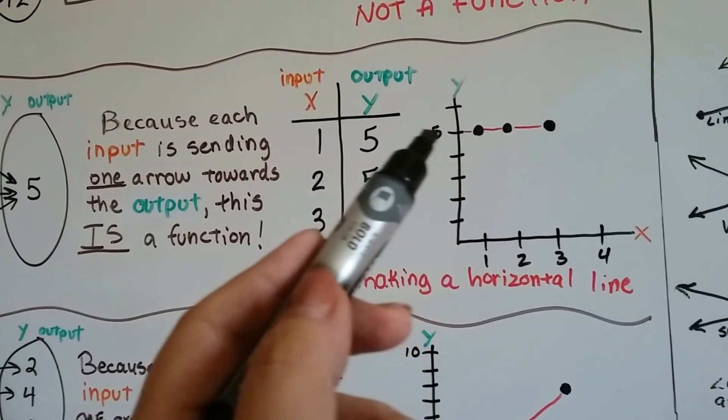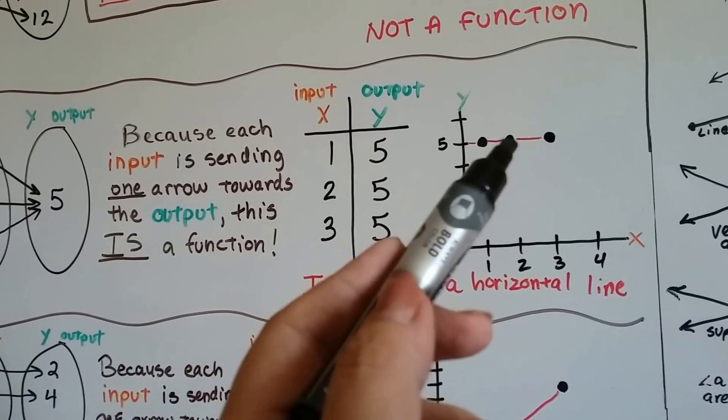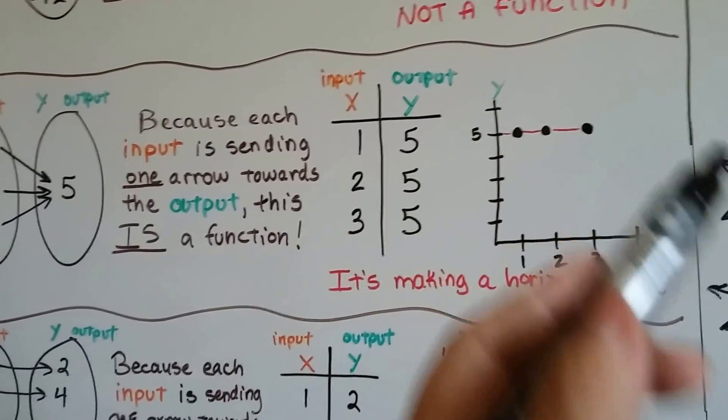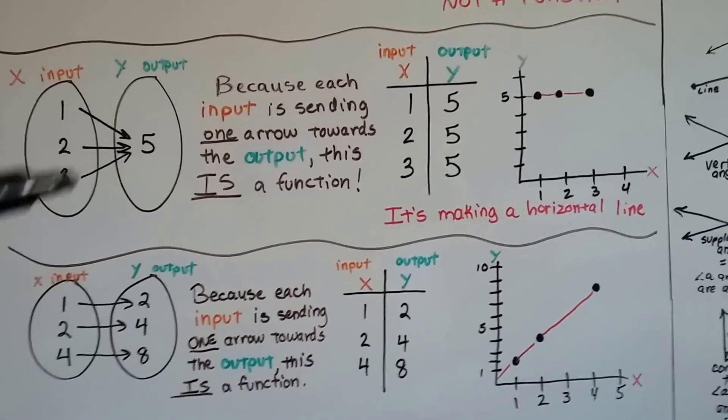1 with a 5 on the y is right here. 2, x with a 5 on the y is right here. And 3, x with a 5 on the y is right here. That's making a horizontal line. See? That is a function. The inputs are sending one arrow across.